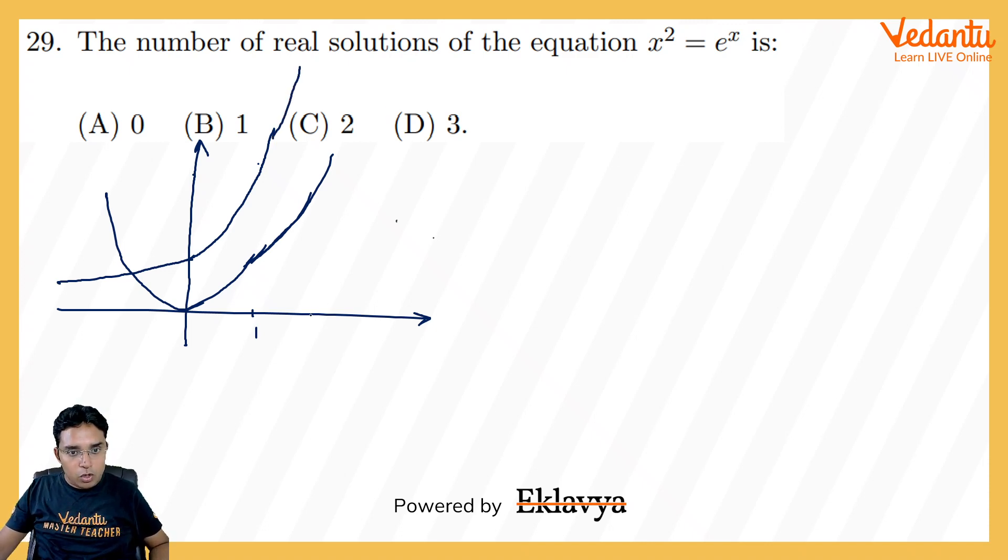Now to check, or you may do one more thing, you may put x is equal to 2 also. At 2, it will take just value 4. Whereas at 2, e power x will be somewhere around 2.7 whole square, somewhere around 7. So it looks like the gap is going to be widened. But I will tell you one more logic for this.